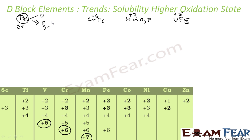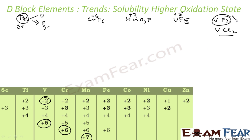Note that fluorides are actually unstable in their low oxidation states. For example, VF2 is unstable, but VCl2 is stable. Vanadium can have a plus 2 oxidation state, but VF2 is unstable while VCl2 is stable. So fluorides and oxides need higher oxidation states for stability.